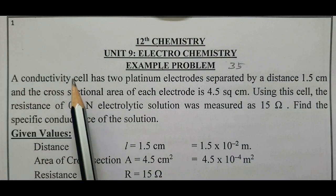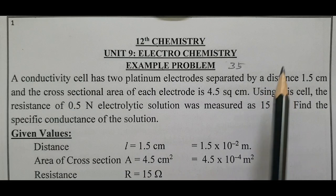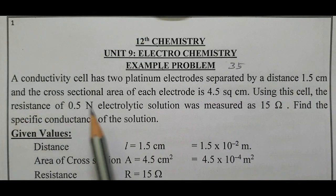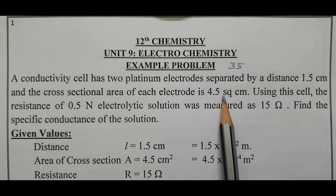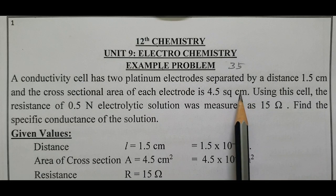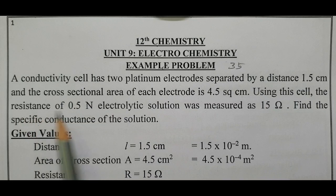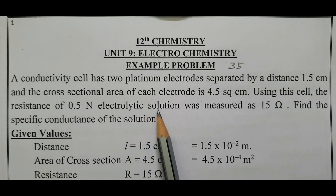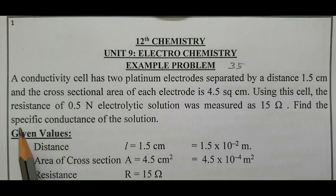A conductivity cell has two platinum electrodes separated by a distance L value 1.5 centimeter and the cross-sectional area of each electrode is 4.5 square centimeter. Using this cell, the resistance R of 0.5N normality electrolytic solution was measured as 15 ohm. Find the specific conductance kappa of the solution.